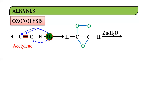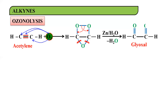In the presence of zinc and water with heat, the oxygen–oxygen bond breaks homolytically and the carbon–oxygen bond also breaks. What you get is a compound with H–C–C–H where both carbons have a C=O group. Such a compound with two adjacent C=O groups is called a glyoxal.